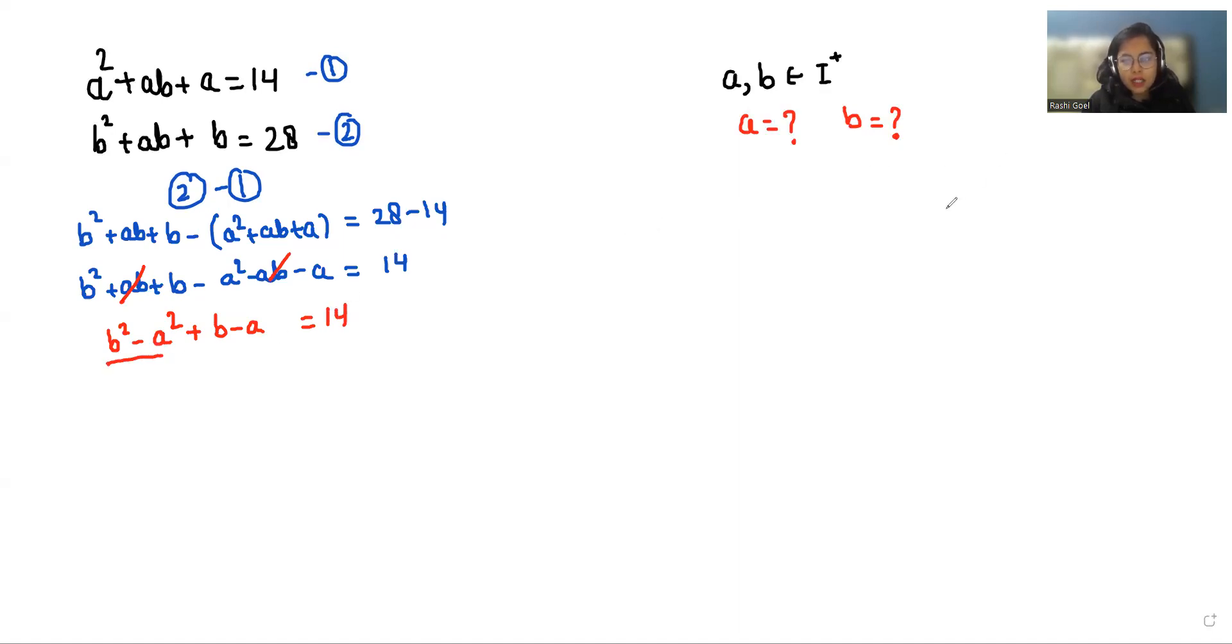So here we can use a very famous identity, a² - b² = (a + b)(a - b), so we can factor b² - a².